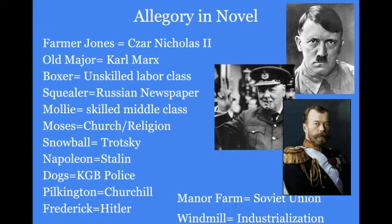Starting off in Chapter 1, we have Farmer Jones, who you might perhaps see as Tsar Nicholas II — a precursor to communism. Old Major might represent Karl Marx, who invented the idea of communism. Then we might look at Boxer the horse as being part of the unskilled labor class — the common man, representing a lot of that labor class.